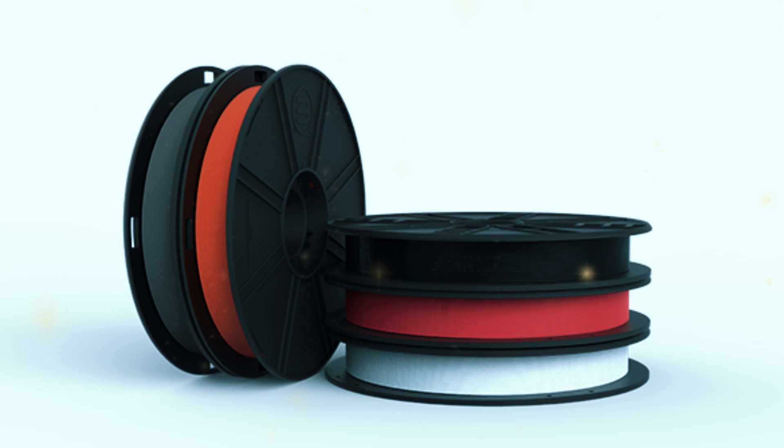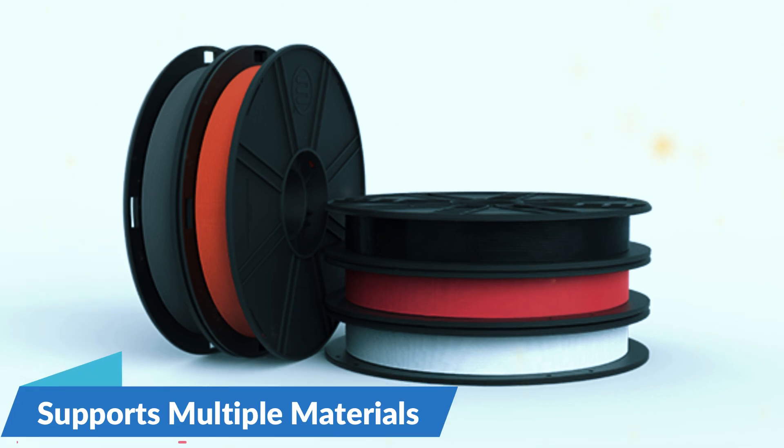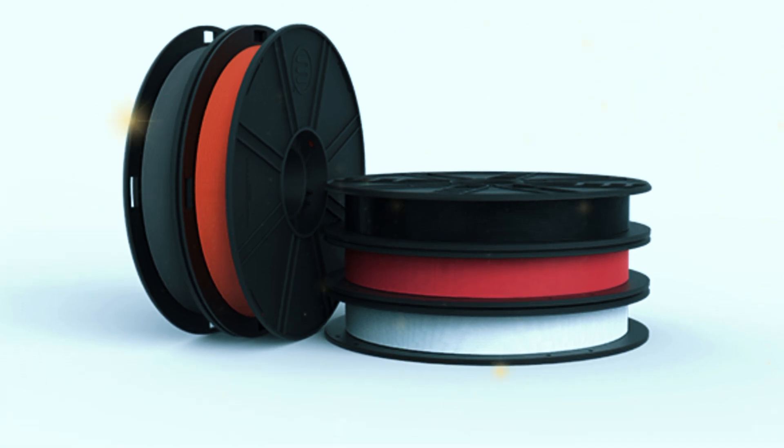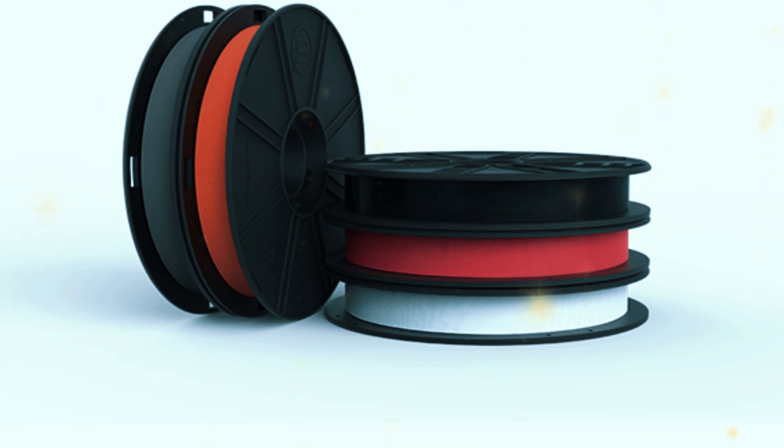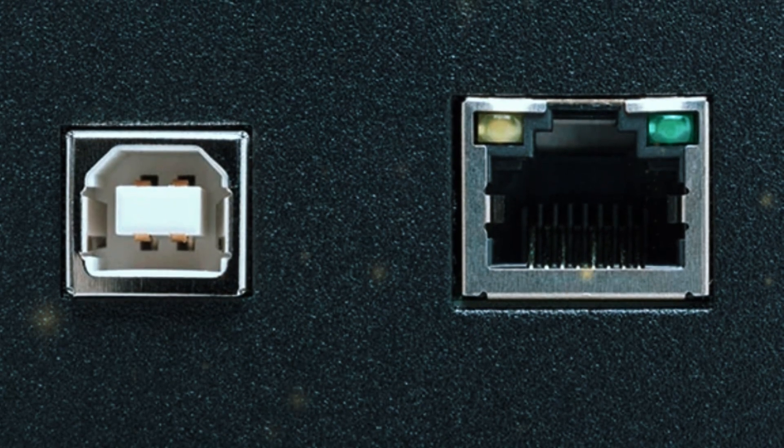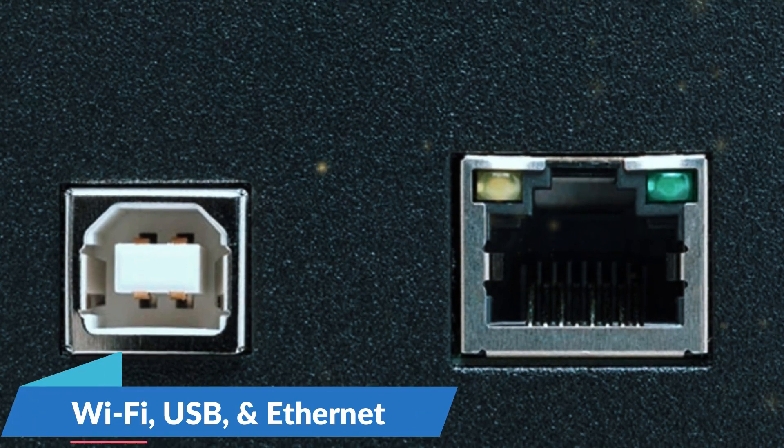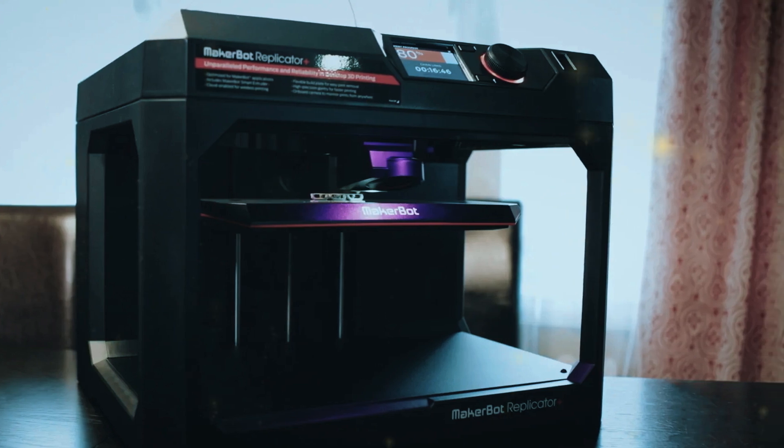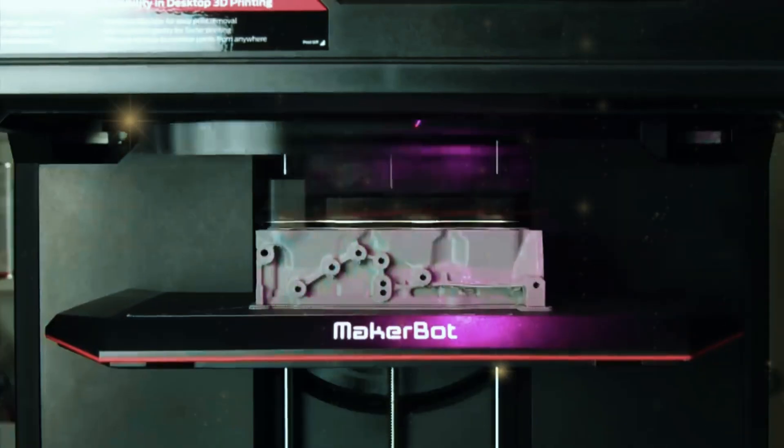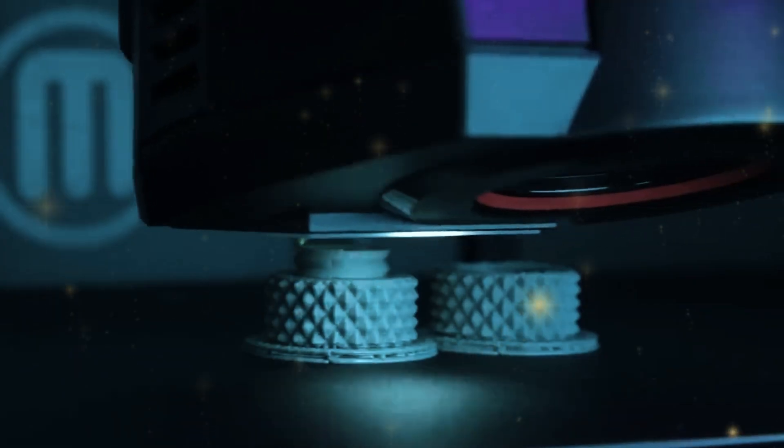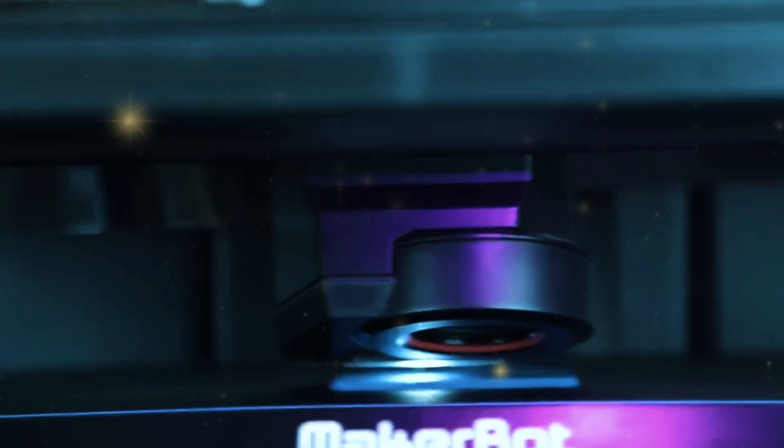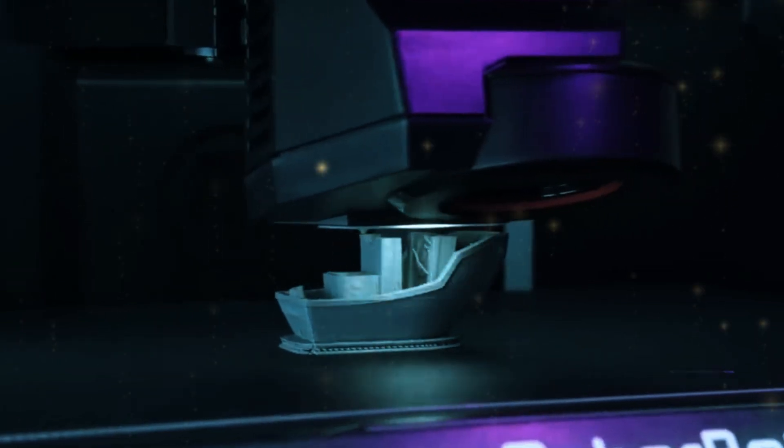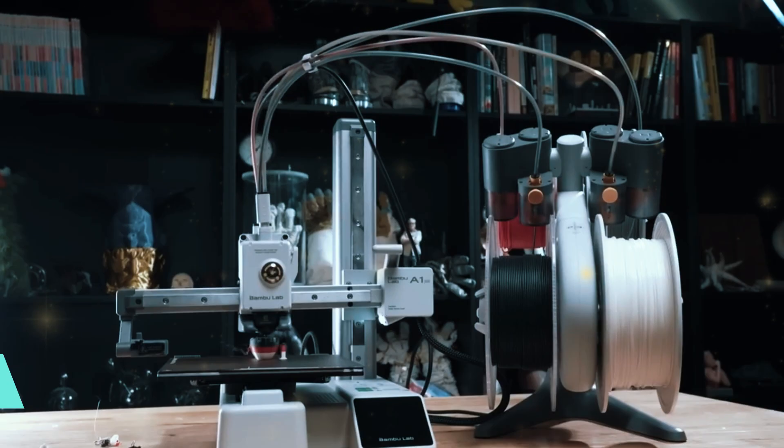The MakerBot Replicator Plus also supports a range of materials, including PLA and tough PLA, giving you the flexibility to choose the best material for your project. In terms of connectivity, the Replicator Plus offers Wi-Fi, USB, and Ethernet options, ensuring that you can send your files to the printer from virtually any device. This versatility, combined with its consistent performance, makes the MakerBot Replicator Plus a solid choice for anyone looking to dive into the world of 3D printing or upgrade their current setup.